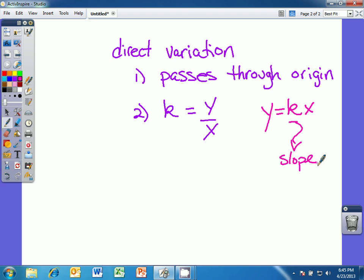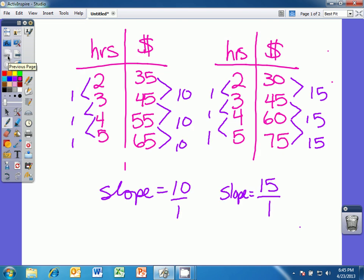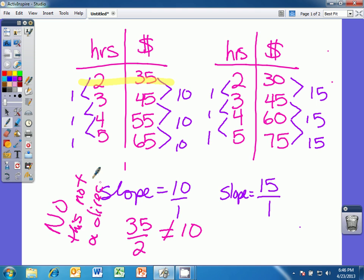So if we think about those tables without graphing them, do the slope on each of those equal y over x? So if we go back to table 1 and we look at, for example, this first ordered pair, 2, 35, does the slope equal y over x? So if it does, then it would be a direct variation function. So in order for table 1 to represent a direct variation function, 35 over 2 must equal 10. Well, it doesn't, so no, this is not a direct variation function, because 35 over 2 does not equal 10.